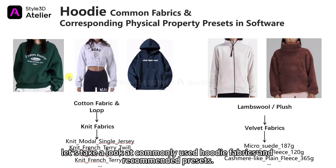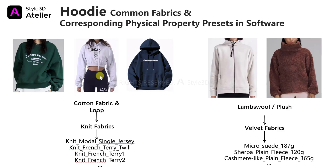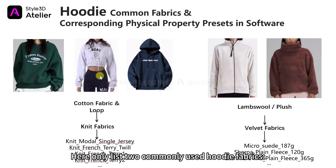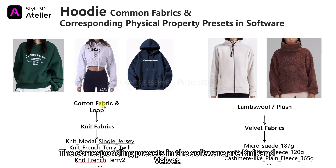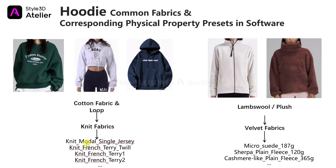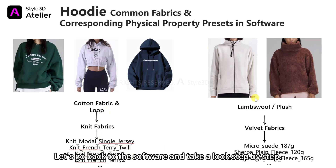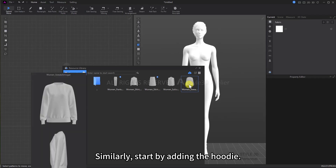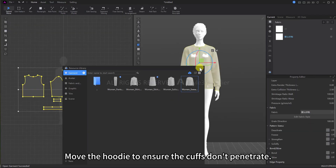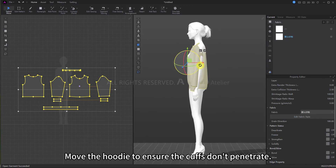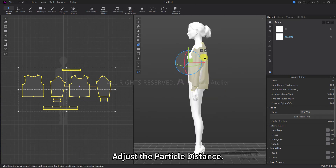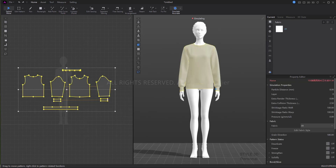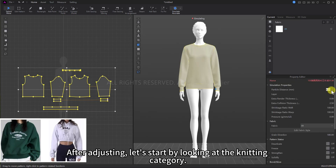Next, let's look at commonly used hoodie fabrics and recommended presets. Here we list two commonly used hoodie fabrics: cotton fabric/loopback and lambswool/plush. The corresponding presets in the software are knit and velvet. Below are some recommended presets. Let's go back to the software. Similarly, start by adding the hoodie, move it to ensure the cuffs don't penetrate, and adjust the particle distance. After adjusting, let's start by looking at the knitting category.